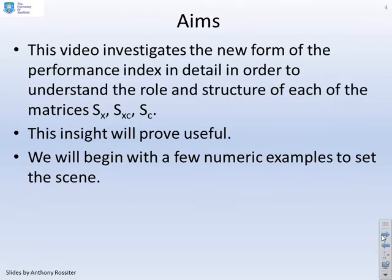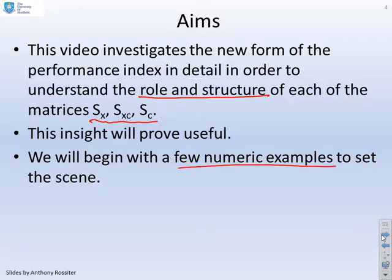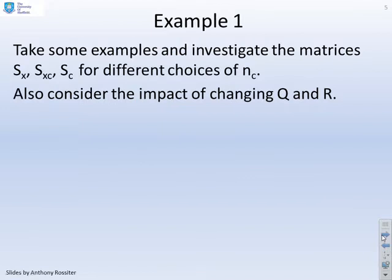The aim is to investigate the role and structure of each of these matrices in the performance index: SX, SXC, and SC. Understanding what these look like and what role they play could yield useful insight. We'll begin with a few numerical examples to set the scene, calculating these matrices for a number of different examples, changing NC, changing Q, and changing R, to see how these affect the matrices.